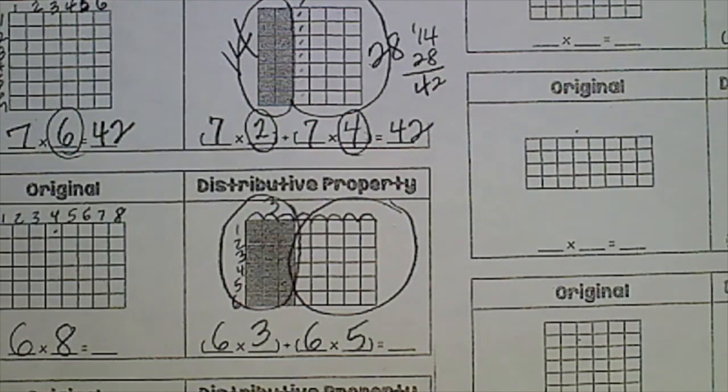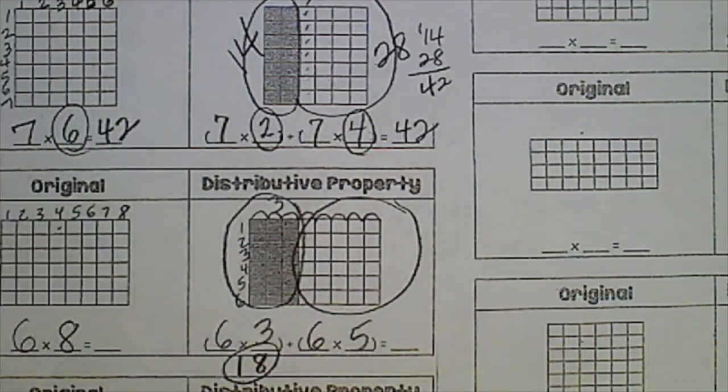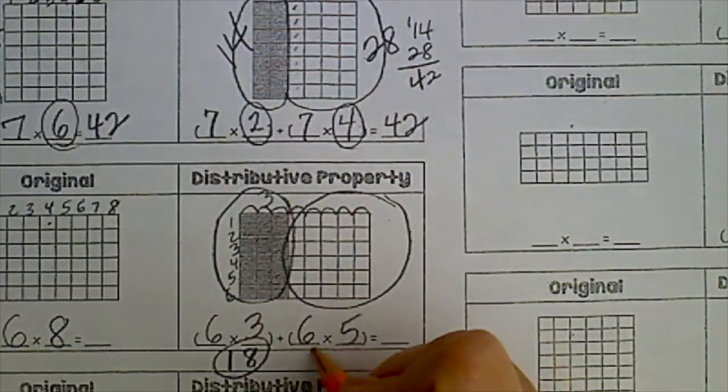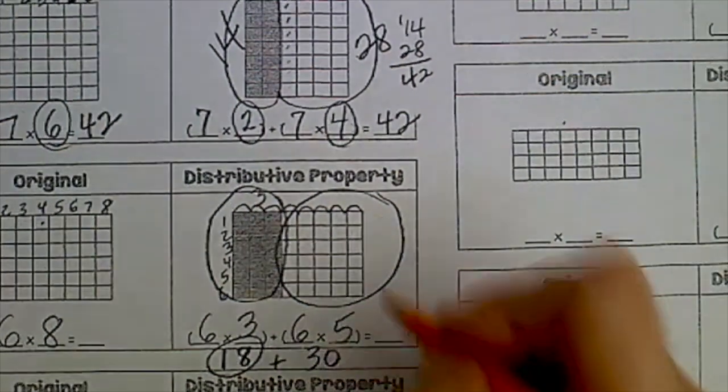And then six times five, that's easy, that's thirty. And eighteen plus thirty is forty-eight.